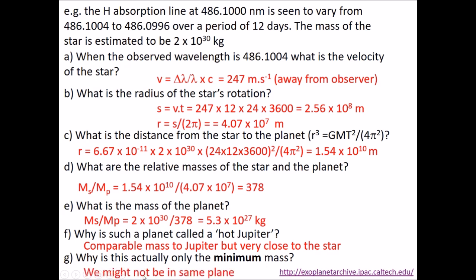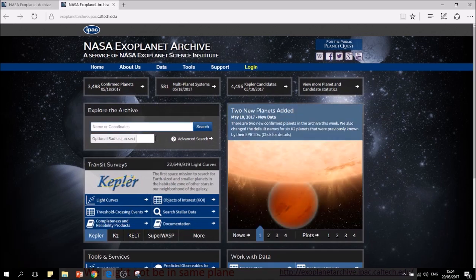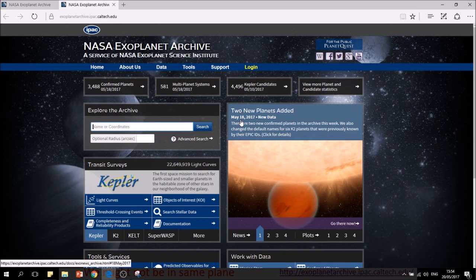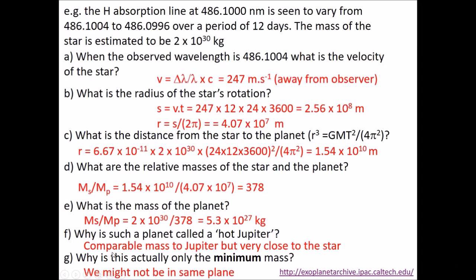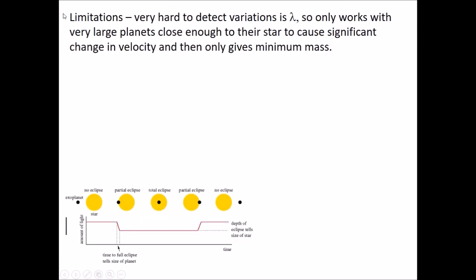This is only a minimum mass because we're assuming in all of this that we're in the same plane. There is a great little data set at Exoplanet Archive, the IPAC collection from Caltech, and you can look up all the stars. It's the 20th of May today, and two days ago two new planets were discovered. This is how it is now - they're discovering new planets pretty much literally every day of the year.